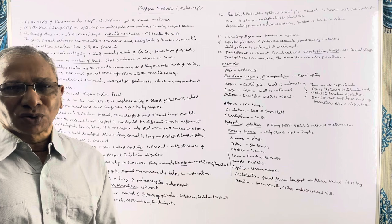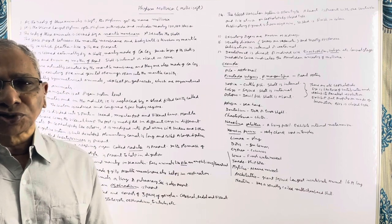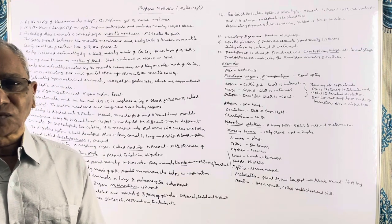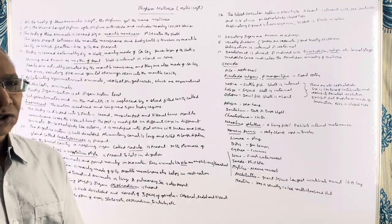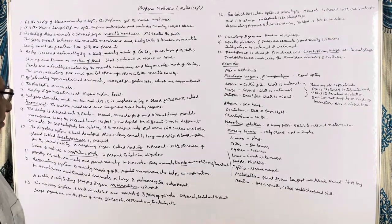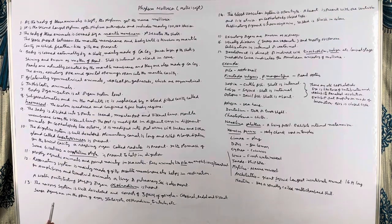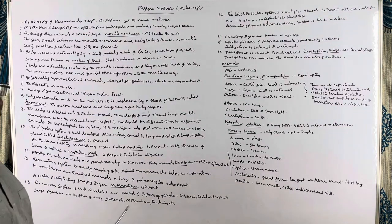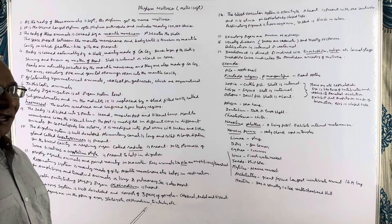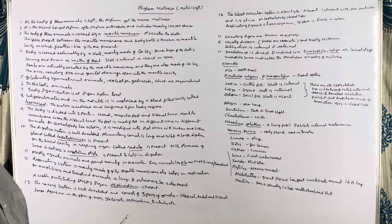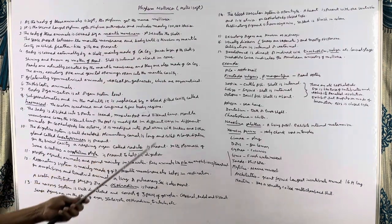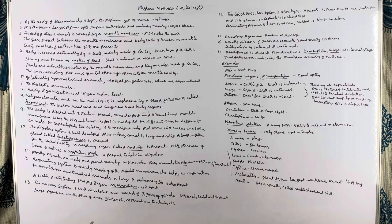Later on, the coelome is replaced by a blood-filled cavity known as a haemocoel. The true coelome is reduced and confined to few parts of the body. The body of molluscans is divided into three main parts: the head, the foot, and the visceral hump. The visceral hump is covered by the mantle membrane.